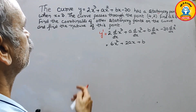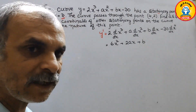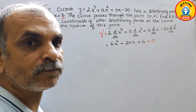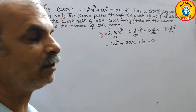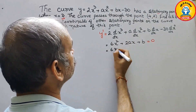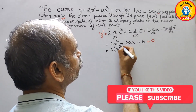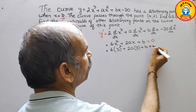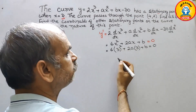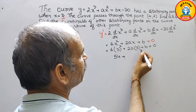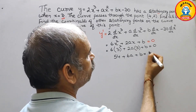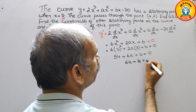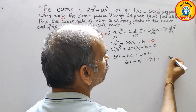They have told x equals 3. That means if we substitute 3 here, we will get 0, since it is a stationary point. So substituting: 6(3²) plus 2a(3) plus b equals 0. Therefore, 6a plus b equals minus 54. This is our first equation.